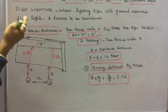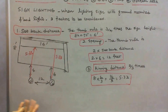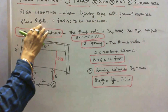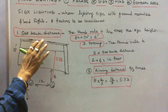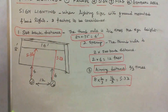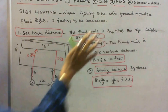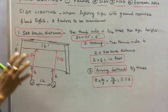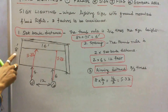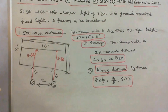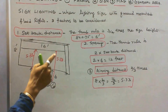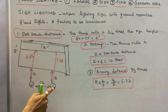The second type is sign lighting. A sign is nothing but an advertisement board. When lighting a sign using ground-mounted floodlights, three factors should be considered: setback distance, spacing, and aiming distance. The thumb rule for setback is 3/4 times the sign height. If the sign height is 8 feet, then 8 times 0.75 equals 6 feet — the distance between the advertisement board and the projector is 6 feet.